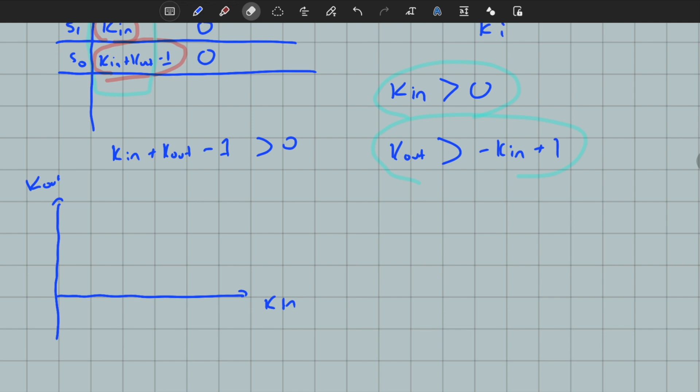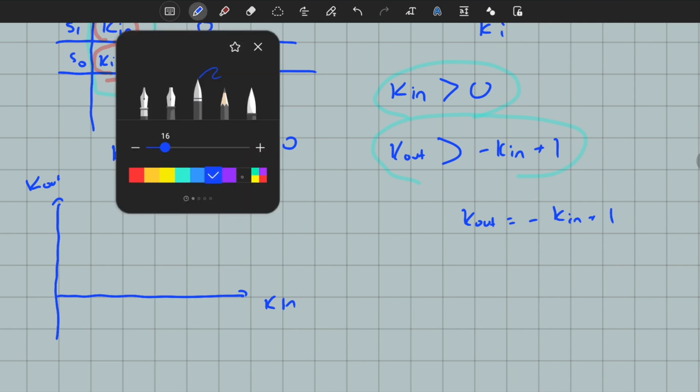k_out should be greater than minus k_in plus 1, so we have a boundary which is the line k_out equals minus k_in plus 1. This is the boundary of stability where stability breaks down. This line crosses here at one.